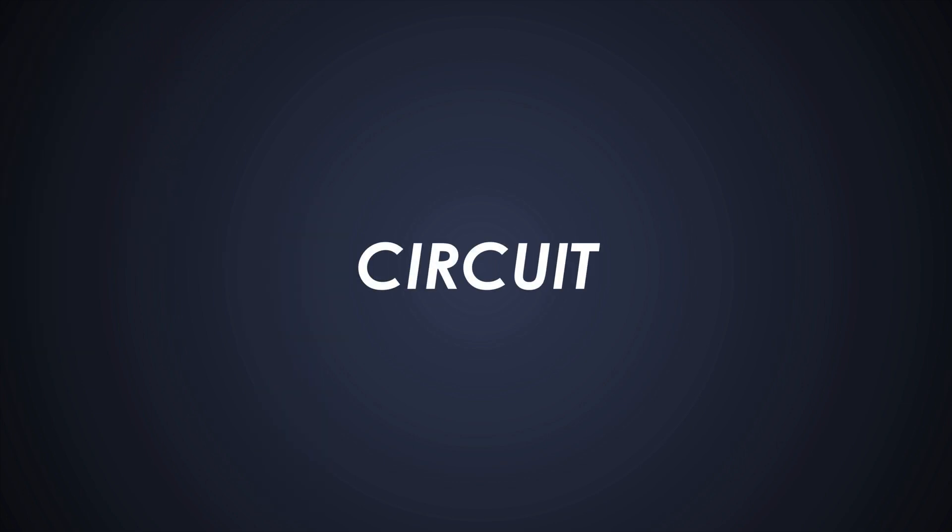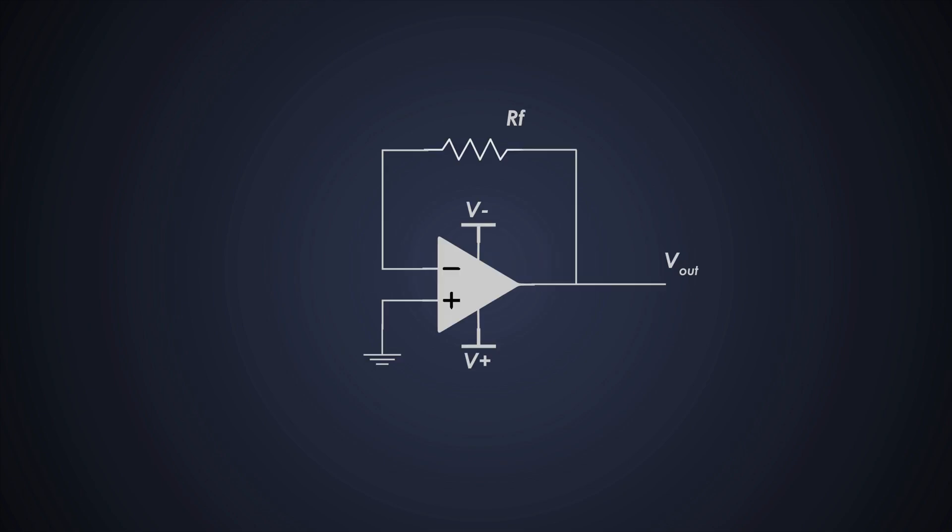Let's dive into the design. The basic TIA circuit includes an op-amp, a feedback resistor, and an input current. So the output voltage is given by this equation.